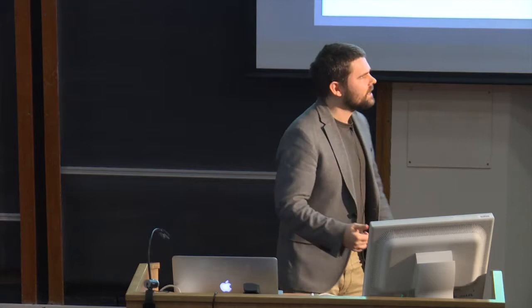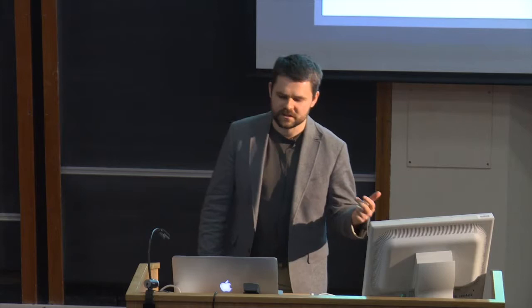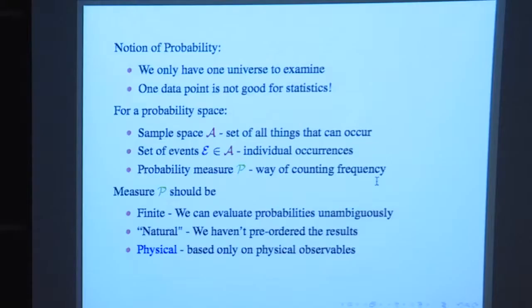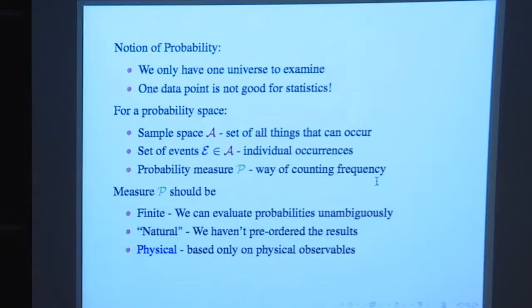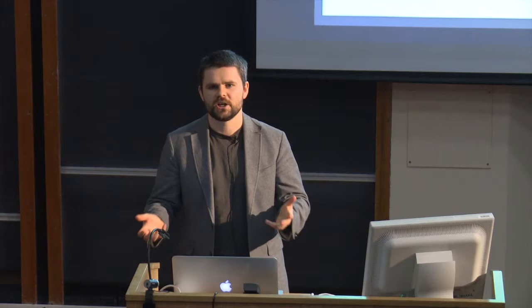When you have a continuous distribution you need a much better notion of a measure. Most of what I'm going to focus on today is understanding this measure problem — how one defines a measure on phase space for an inflationary system. There are three criteria I'll impose. First, the measure should be finite, because if you have an infinite set, even with simple frequentist arguments, you can come up with any answer you want depending on the order in which you count.